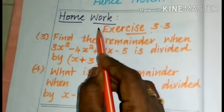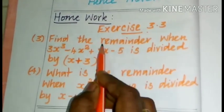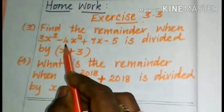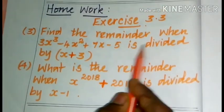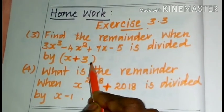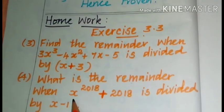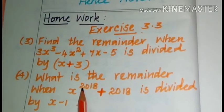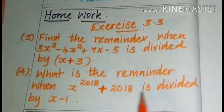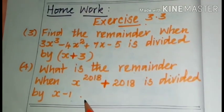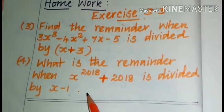Let's see today's homework. Exercise 3.3, third question: find the remainder when 3x³ − 4x² + 7x − 5 is divided by x + 3. Fourth question: what is the remainder when x²⁰¹⁸ + 2018 is divided by x − 1? Do the sums regularly in your classwork now.